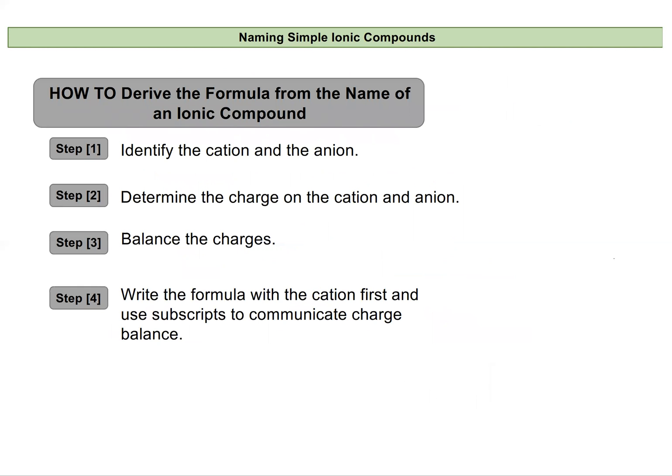So then what about deriving the formula from a name of an ionic compound? Well, let's do something we've seen before, aluminum oxide.